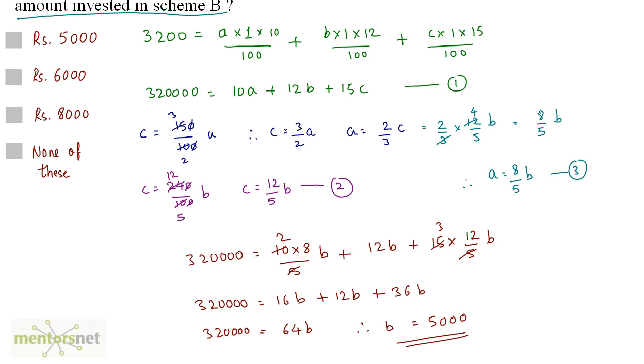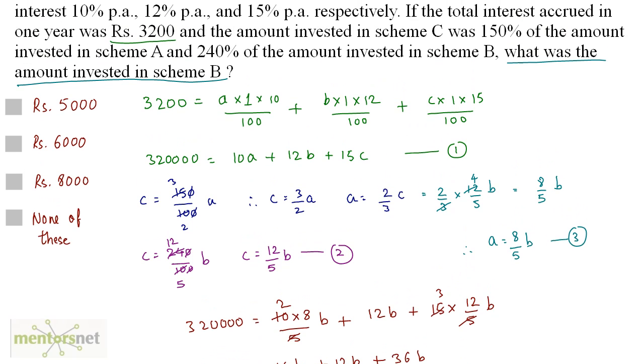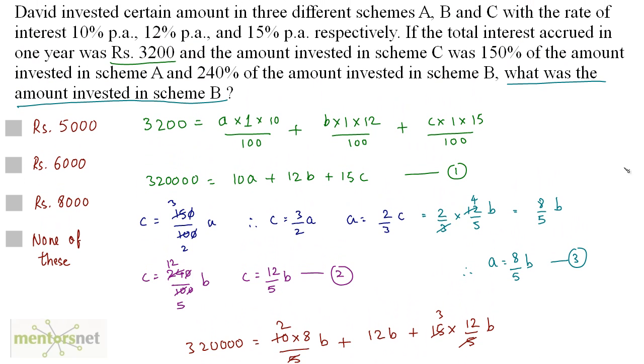So the amount invested in scheme B was Rs. 5,000. Option A is the correct answer.